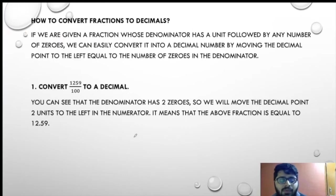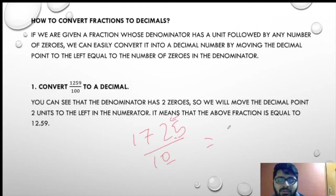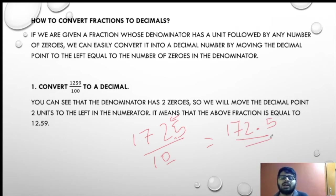If I give you a number 1725 upon 10 — how much is it? One zero, so I go one number to the left. That is 172.5 is my answer. Simple. It is very simple and can be solved very easily.